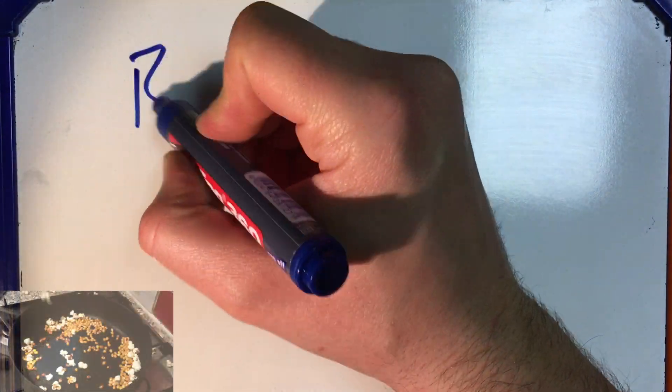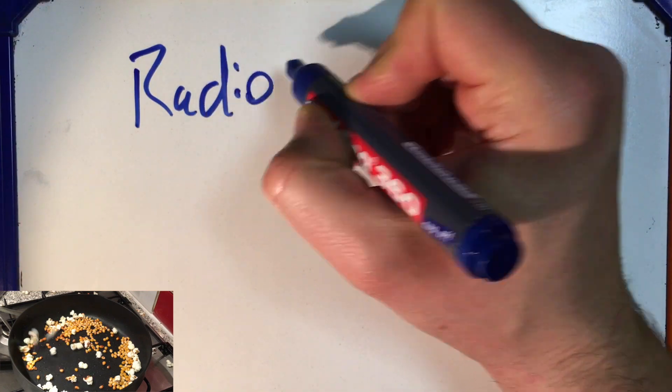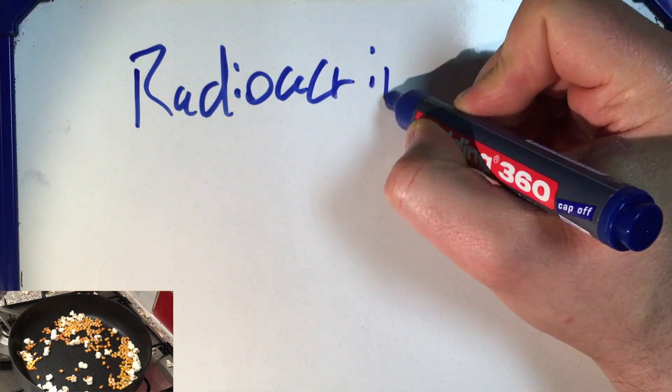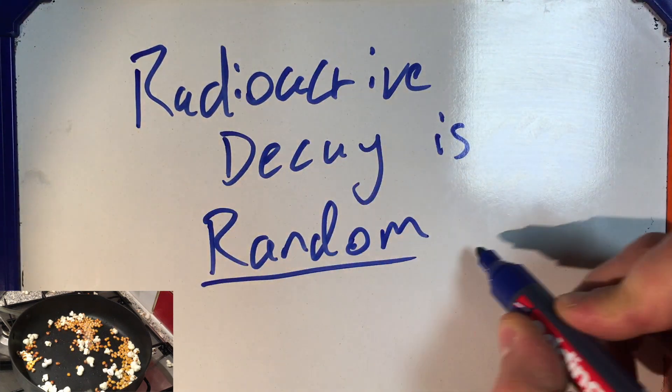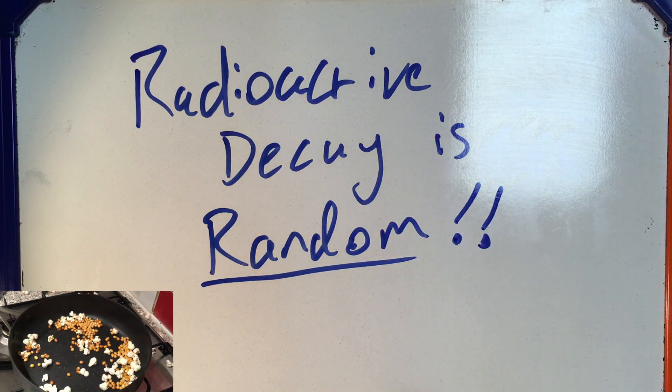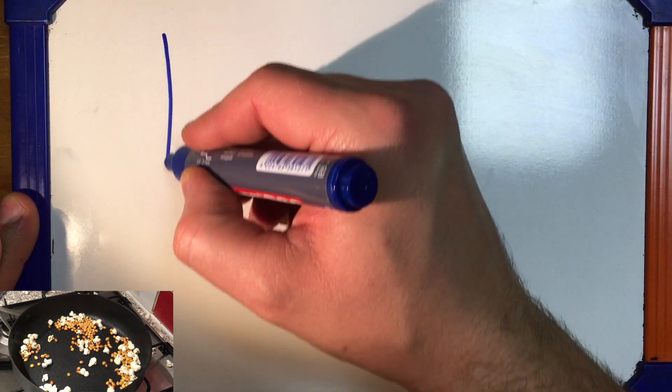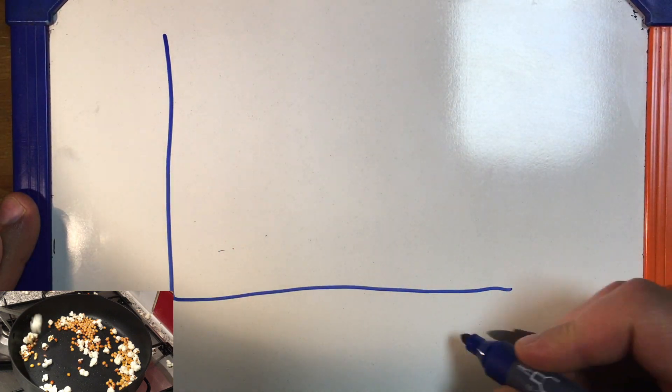Now, a key thing to remember is that radioactive decay on a small scale is completely random. So on the scale of like a single nucleus, we can't predict when it's going to decay. We know that it will decay, but we can't say exactly when it'll decay.